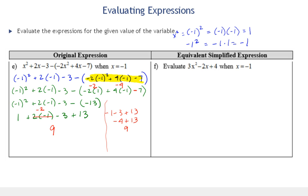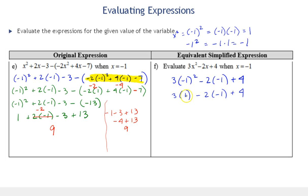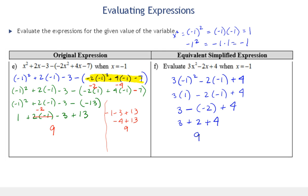Now let's evaluate the simplified expression, which you can see is much easier: 3x² minus 2x plus 4, when x equals negative 1. Substituting: 3 times (negative 1)² minus 2 times negative 1 plus 4. Perform the exponent first: negative 1 squared is 1. Then the two multiplications: 3 times 1 is 3, and 2 times negative 1 is negative 2. Subtracting a negative becomes adding a positive, so 3 plus 2 plus 4 equals 9. Our results check — the expressions are equivalent.